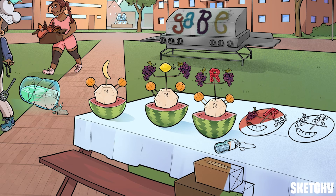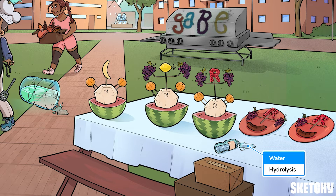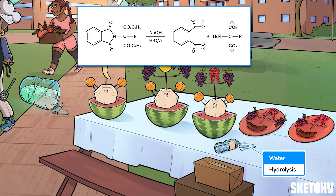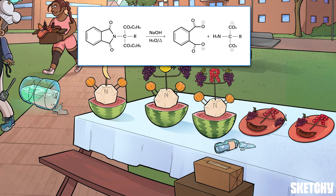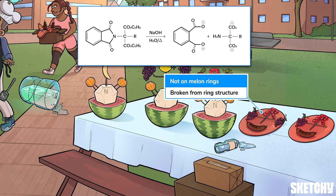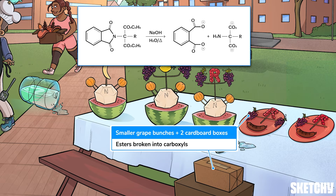Yet another spilled water bottle lets us know that we've got another hydrolysis reaction on our hands. In this one, with the help of heat and a strong base, the ring structure and both esters are broken apart to form a carboxylic acid containing two carboxyl groups and one amino group. To symbolize the carboxylic acid leaving the ring structure, we've separated a fruit skewer from the ring-like watermelon and placed it on a plate. The grape bunches are smaller this time to remind you that the esters become carboxyl groups, and there are two cardboard boxes below to help you remember these are two carboxyl groups.